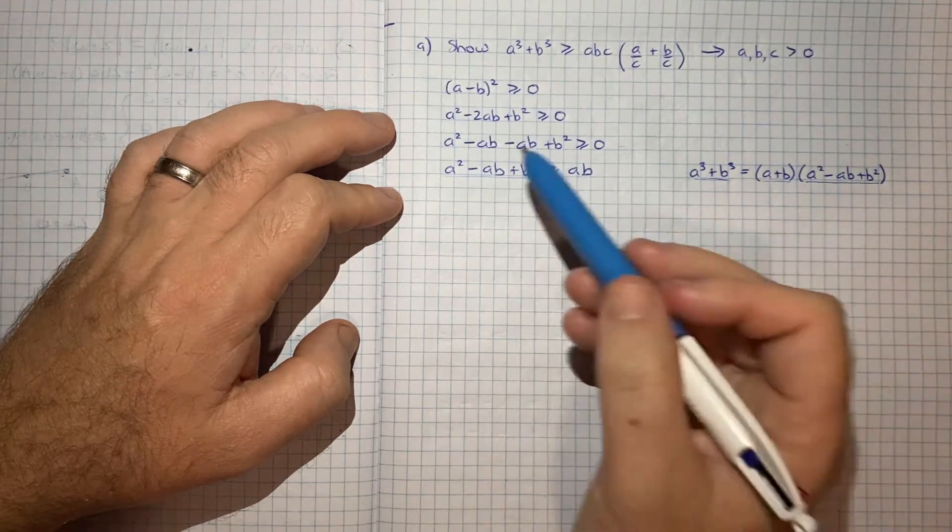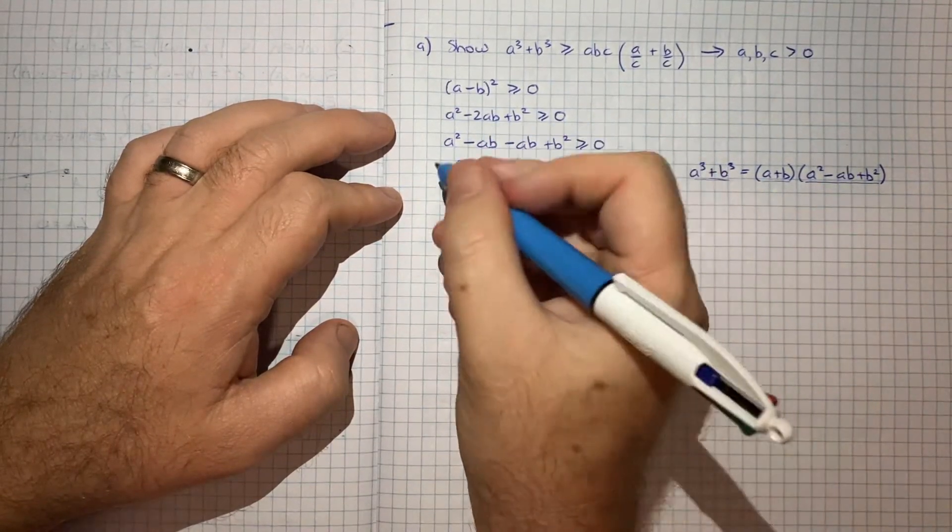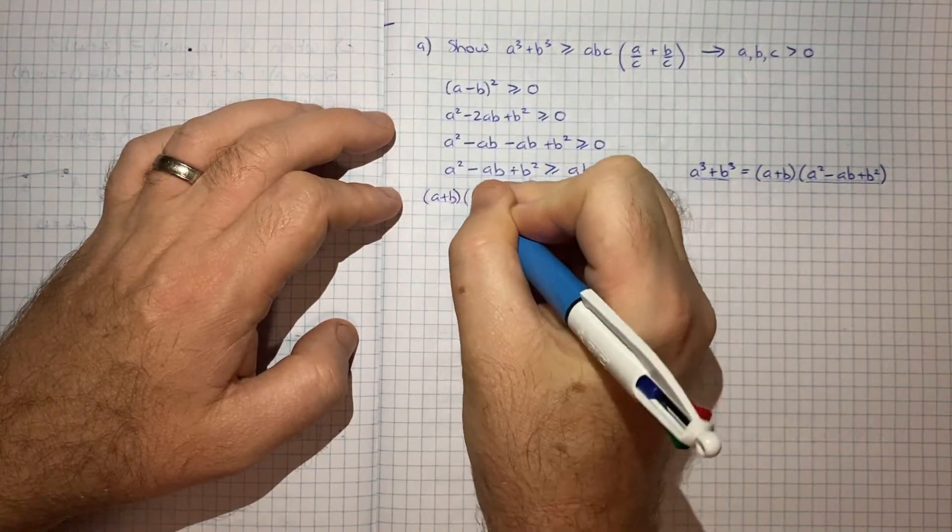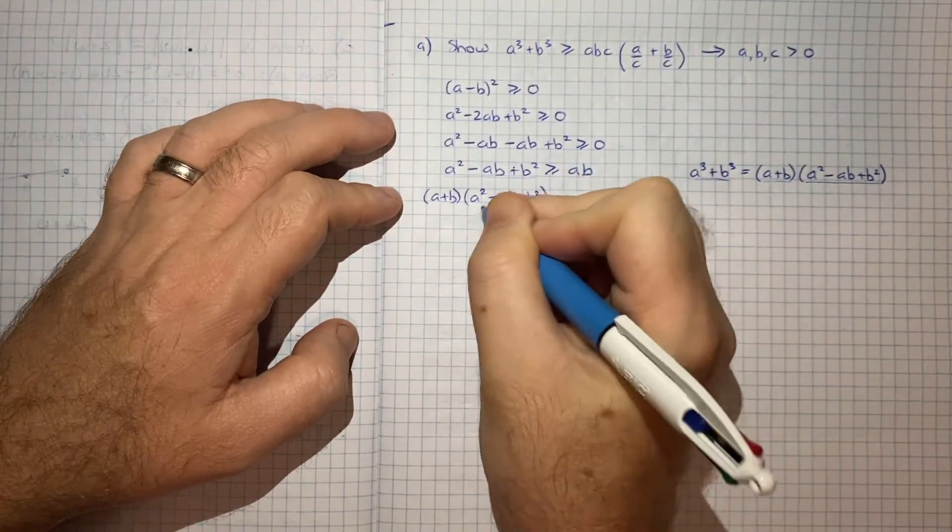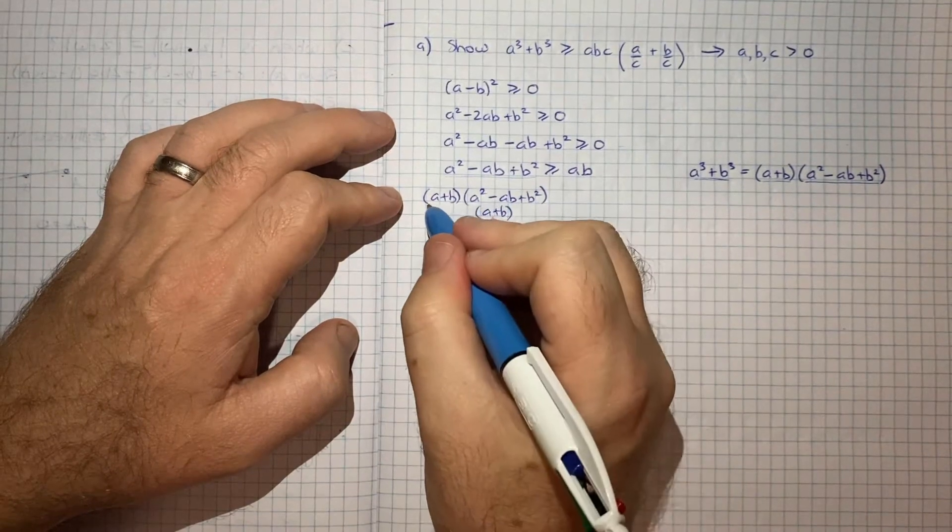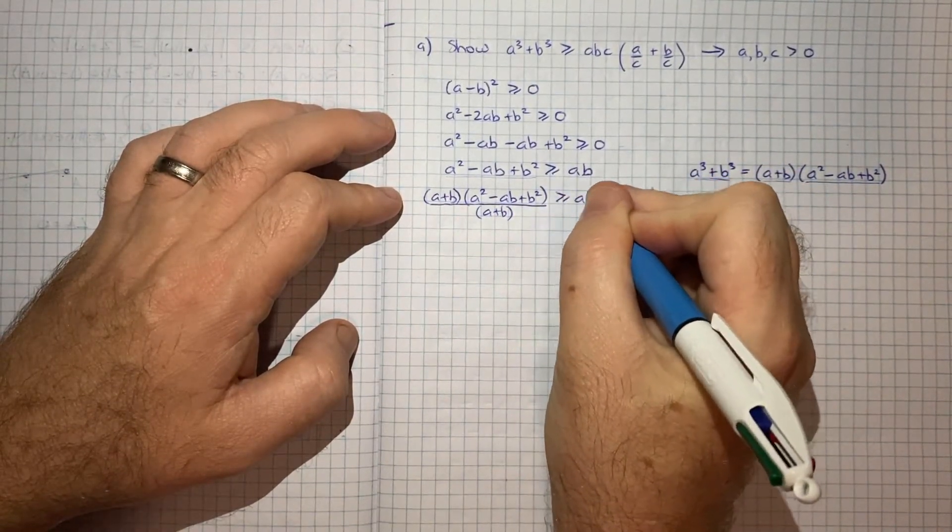So maybe what we can do is multiply top and bottom by a plus b. So let's do that. So we'll go a plus b, a squared minus ab plus b squared, divided by a plus b to make sure we haven't really changed anything on this left-hand side. So that's greater than or equal to ab.